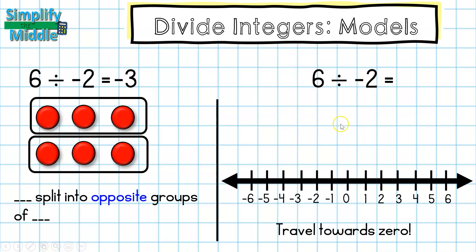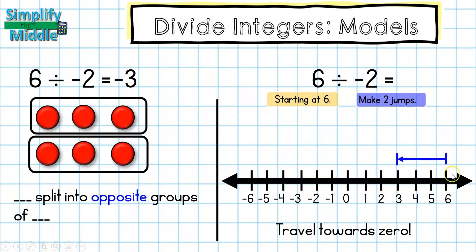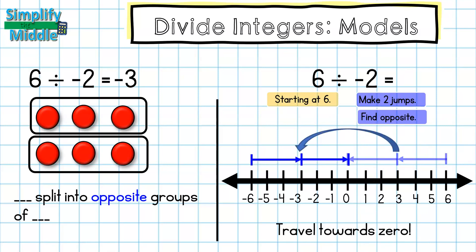On the number line, we first solve as if the negative isn't there — traveling towards zero from six, making two jumps: six to three, then three to zero. Then we find the opposite by flipping to the other side of the number line. So the answer is also negative three. Notice: we solved positive six divided by positive two, and the negative on the divisor told us to find the opposite at the end.